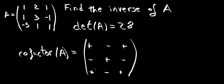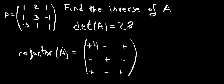Now that I have my sign convention written on the cofactor matrix, I'm going to calculate the minor for each of the elements. The minor for 1 is going to be this determinant here: 3 times 1, minus minus 1 times 1, which is going to be 4. For the second element, this number 2, the minor is going to be what we get with these two values here, and these two values here. So our determinant is going to be 1 times 1 minus minus 1 times minus 5, which is going to give us a minus 4.